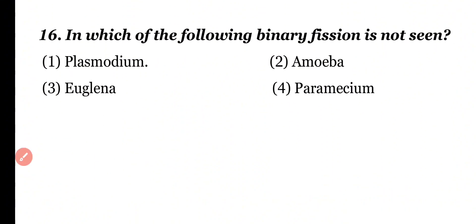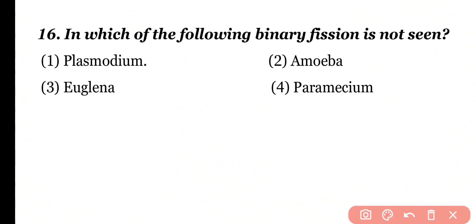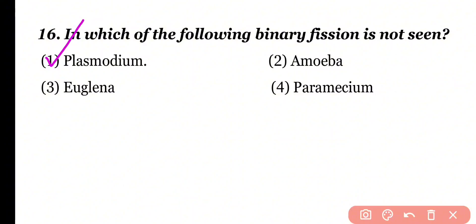Question number 16: In which of the following is binary fission not seen? Plasmodium, Amoeba, Euglena, or Paramecium? Correct answer is option A. In Plasmodium, multiple fission occurs; binary fission does not occur in it.